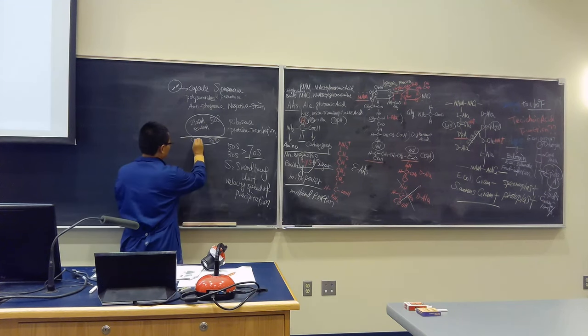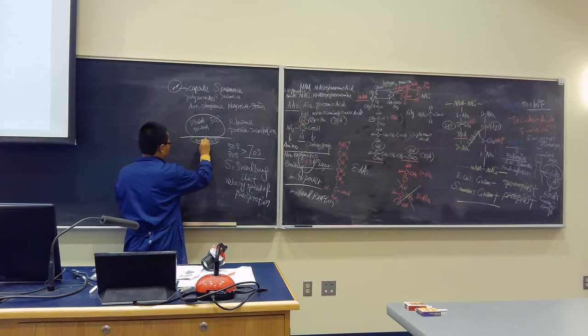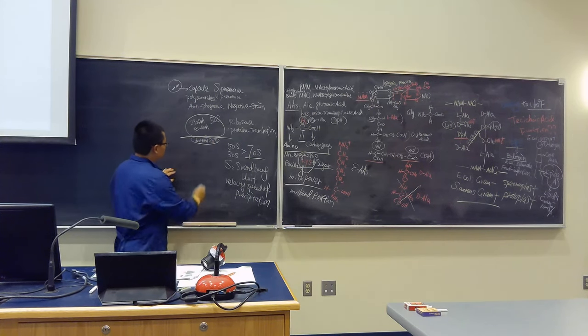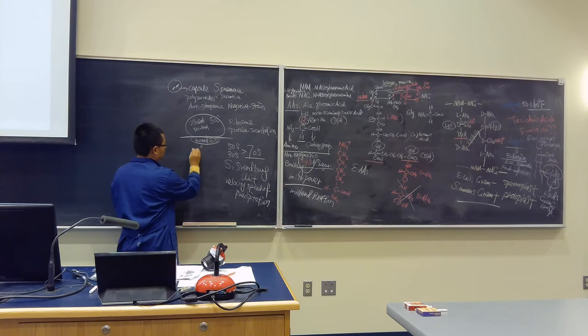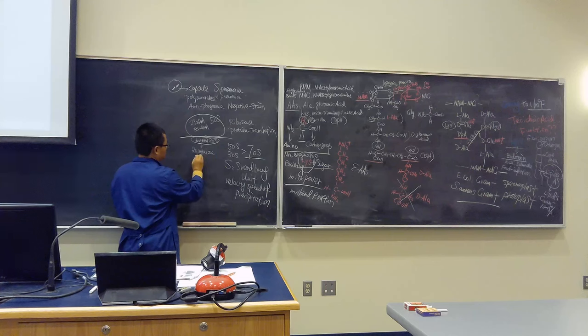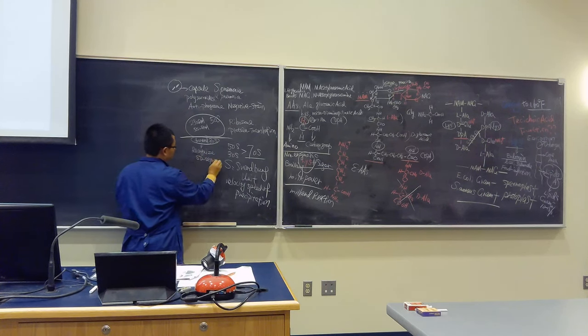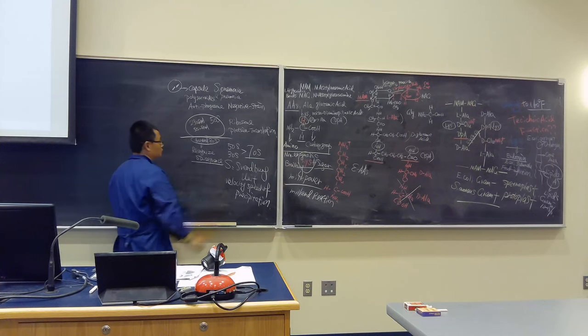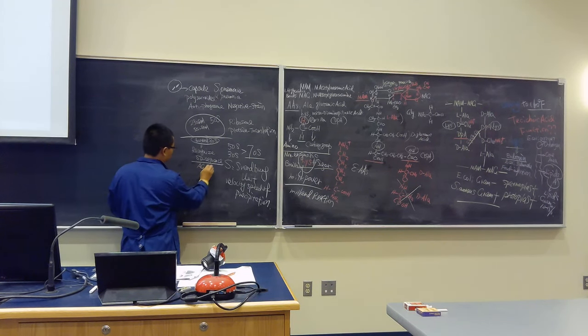How about the 30S? The 16S rRNA. What is the function of the 16S rRNA? To recognize the Shine-Dalgarno sequence. That's the ribosome binding sequence. The sequence is very conservative - AGGAGG. We'll talk about that later.